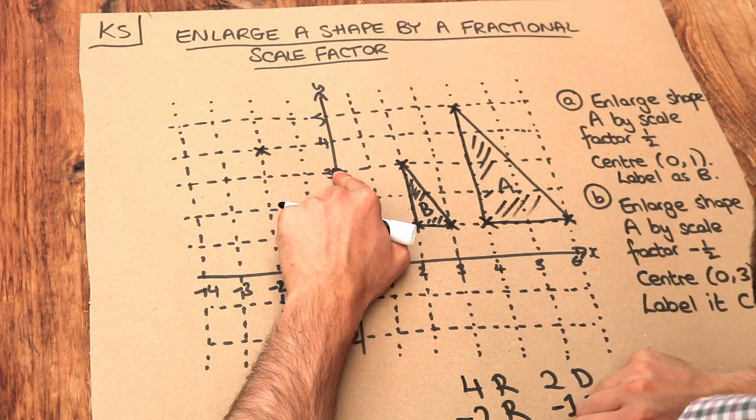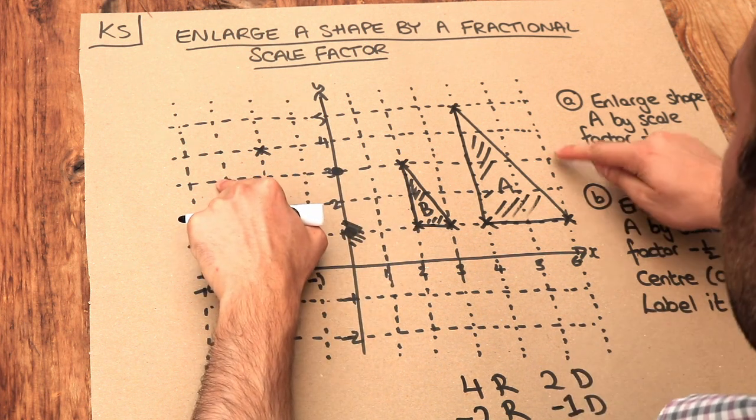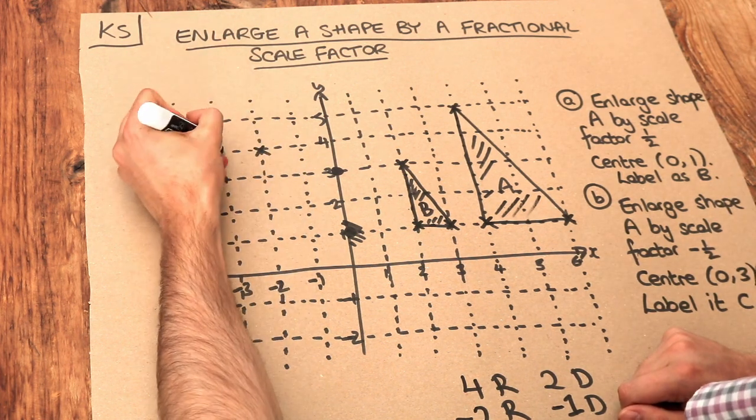becomes 3 left - 1, 2, 3 left. The 2 down becomes half of that but in the opposite direction, so 1 up. We end up here.